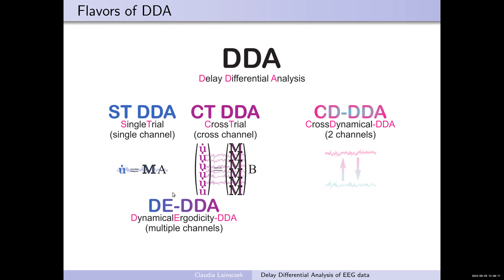Here is the single trial DDA: you have one time series with the little equation. For cross-trial you have the derivative Legos, the matrix Legos, and your coefficients B. This only works if the time series have the same dynamic information. If different time series have different dynamic information, it doesn't make sense. To check if there is the same dynamic information in all the time series, I use dynamic ergodicity DDA. Ergodicity in physics means you can follow one particle for a long time, or have multiple particles and take the space average — if those are the same, the system is ergodic. I borrow this term and define dynamic ergodicity: if the mean of the single trials is similar to the cross-trial result, then you have the same dynamics in the time series.